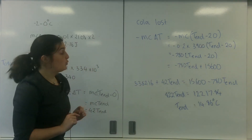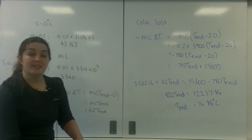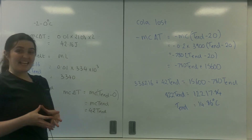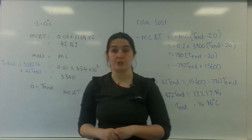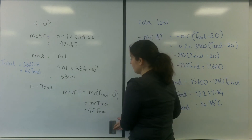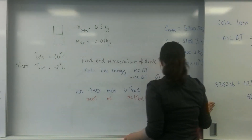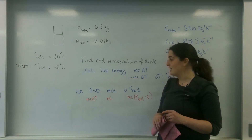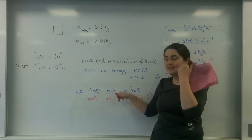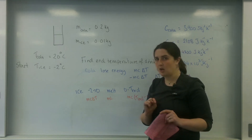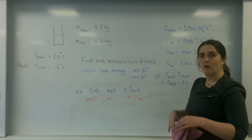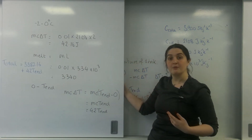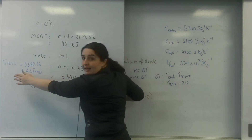So the ice has cooled down my drink to 14.86 degrees C. This is an example of finding the thermal equilibrium temperature. The first thing I did was write out what was happening — that the cola lost energy and the ice went through those stages. Then I focused on one part at a time, starting with the ice.